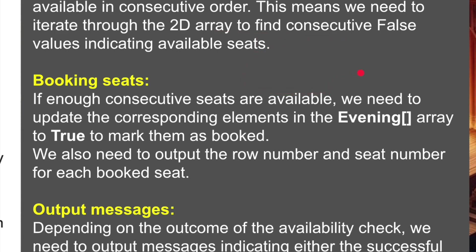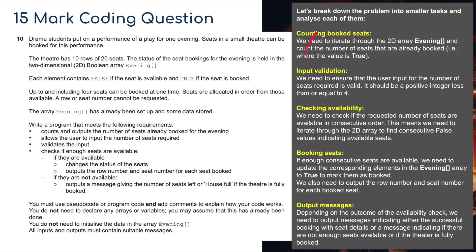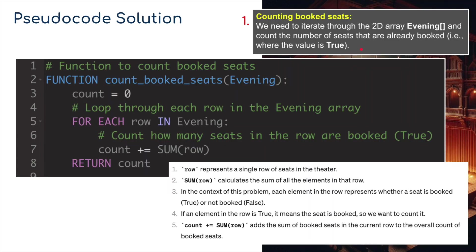The seats need to be in blocks - if people are booking four seats, it finds the next available block of four in the current row. For booking the seats: if enough consecutive seats are available, we update the corresponding elements in the 'evening' array to true to mark them as booked. We also output the row number and seat number for each booked seat. Depending on the availability check outcome, we output messages indicating either a successful booking with seat details, or a message that there aren't enough seats or the theatre is fully booked.